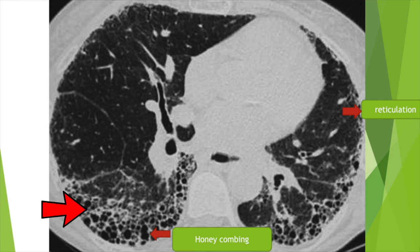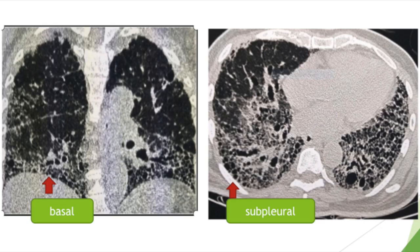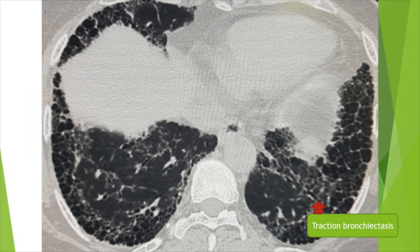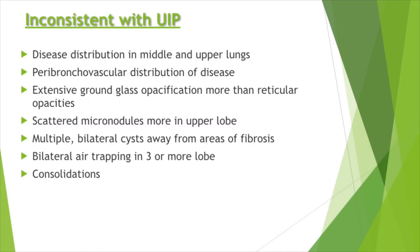Looking at the radiological features of typical UIP: there is honeycombing, which are layers of cysts stacked over one another, and linear opacities called reticulations. These are in subpleural location with basal predominance. We can also see some dilatation of bronchioles due to the pull of adjacent fibrosis.